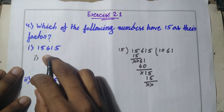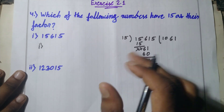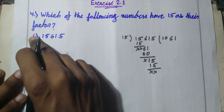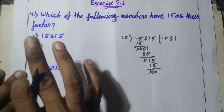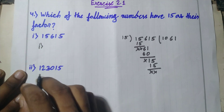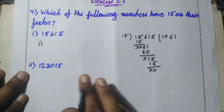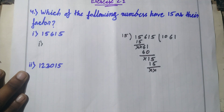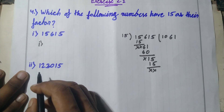Both numbers are given in this question. The first is exactly divisible by 15. Now let's check option number 2: the second number is 1,23,015. Let's divide 1,23,015 by 15.